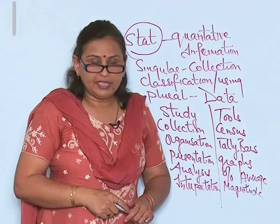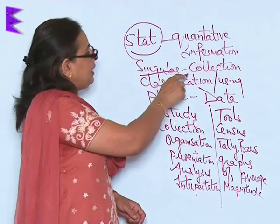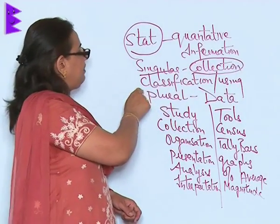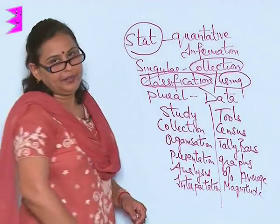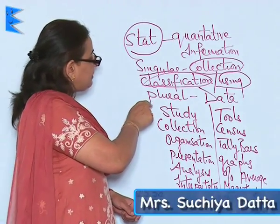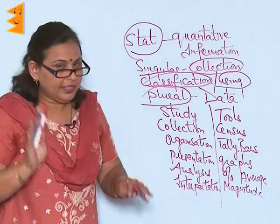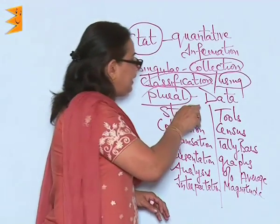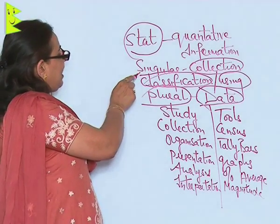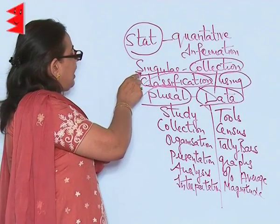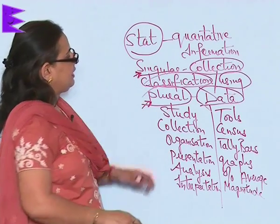When we talk of statistics in a singular sense, it means the collection of data, the classification of data, and the usage of it. But when we talk of statistics in a plural sense, it ultimately means the complete data which is available. This is the primary stage of statistics and this is the secondary stage of statistics.